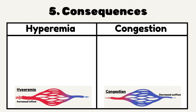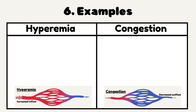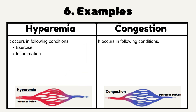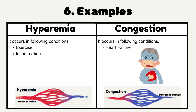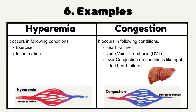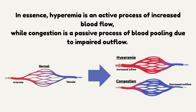Number 5: Consequences. Hyperemia is generally not harmful unless severe. Congestion is often associated with more severe consequences due to impaired venous drainage. Number 6: Examples. Hyperemia occurs in conditions such as exercise and inflammation. Congestion occurs in conditions such as heart failure, deep vein thrombosis, and liver congestion in conditions like right-sided heart failure. In essence, hyperemia is an active process of increased blood flow, while congestion is a passive process of blood pooling due to impaired outflow.